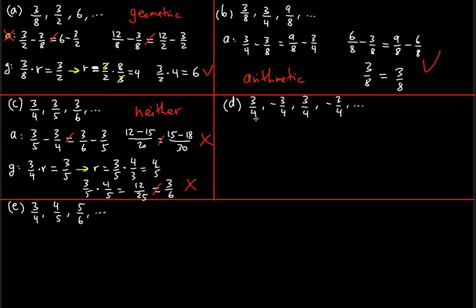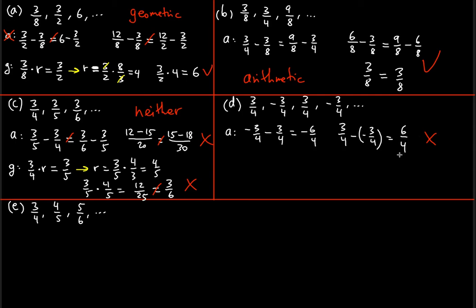Part D — arithmetic test: negative 3/4 minus 3/4 gives negative 6/4, and 3/4 minus negative 3/4 gives positive 6/4. These are not equal because one is negative and one is positive, so this is not arithmetic. For geometric, you can see by inspection that each term is multiplied by negative one — negative to positive and back again — so the common ratio should be negative one.